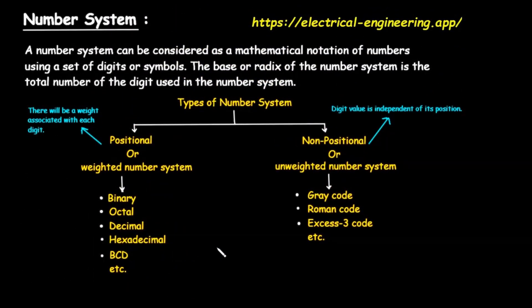The most common positional systems, which we will explore in detail, are binary, octal, decimal, and hexadecimal. On the other side, we have non-positional number systems, also known as unweighted number systems.